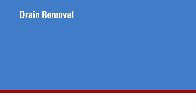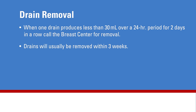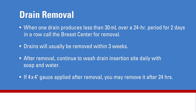The length of time your drain remains in place depends on the amount of fluid coming from the surgical site. When one drain produces less than 30 milliliters of drainage over a 24-hour period for two days in a row, your drain is ready to be removed — call the breast center and the nurses will schedule your appointment. Drains are usually removed within three weeks of surgery regardless of drainage output, though your surgeon may recommend removal at a different time. After your drain is removed, continue washing that area daily with soap and water. Your nurse may tape a 4x4 gauze bandage over the drain site, which you may remove 24 hours later — it is not necessary to replace the gauze.